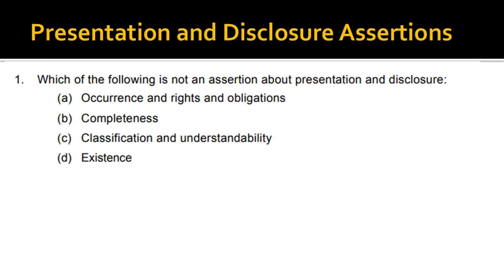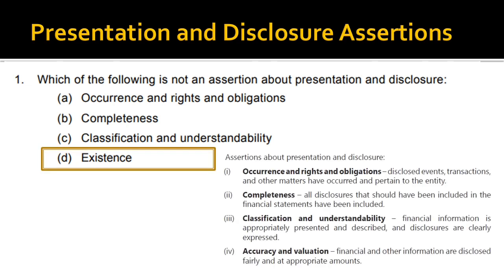The first question: which of the following is not an assertion about presentation and disclosure? Occurrence is an assertion, completeness is an assertion, classification is also an assertion, but existence is not an assertion about presentation and disclosure. The correct answer is existence. Accuracy and valuation is another assertion about presentation and disclosures, which includes that financial and other information are disclosed fairly and at the appropriate amount. Therefore, existence is not an assertion.